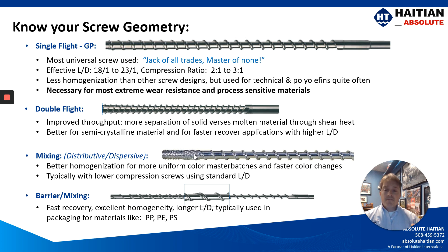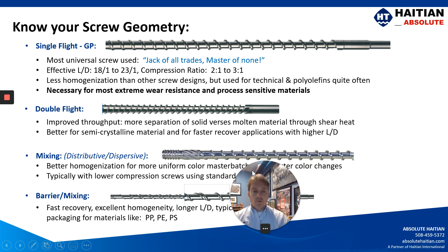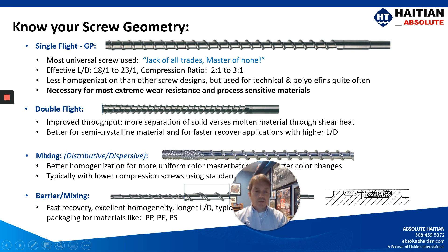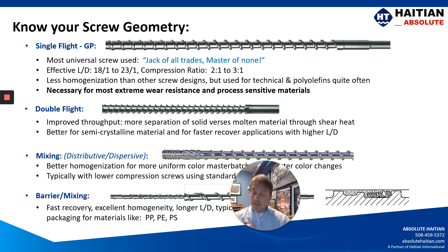You also have a barrier screw, which you'll find in faster cycle applications. It gives you a more homogenous melt and typically has longer L over Ds. You'll see it in larger tonnage machines running polypropylene, polyethylene, and polystyrene. The barrier flight allows melted material to flow down the screw while holding back the solid material, putting it in compression with the barrel — allowing the material to melt more quickly and be pumped down the screw more rapidly. This is the screw you may need in larger packaging applications running faster cycles.